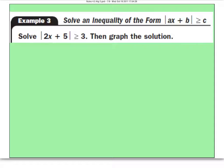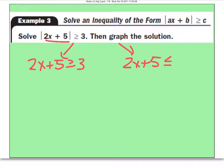So absolute value is all by itself here, so break it up into its 2. 2x plus 5 is greater than or equal to 3. 2x plus 5, flip the sign, less than or equal to, change the number to negative 3.